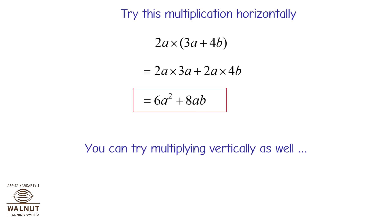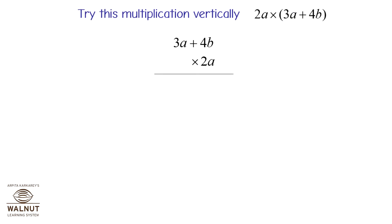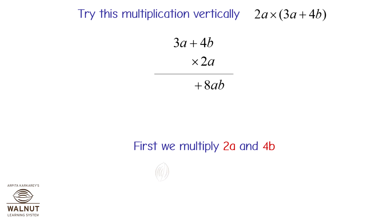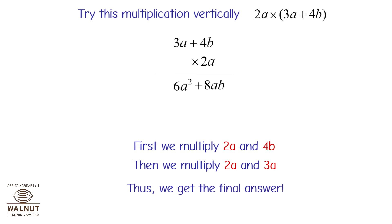You can try multiplying vertically as well. First we multiply 2a and 4b, then we multiply 2a and 3a, and thus we get the final answer.